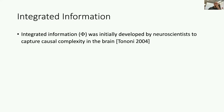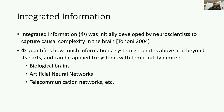Integrated information was initially developed by neuroscientists to capture causal complexity in the brain — typically the brains of biological animals. In a nutshell, Phi, or integrated information, is a measure that quantifies how much information a system generates above and beyond the parts of that system. The main condition for application of this measure is that the system must have a temporal dynamic, meaning it has to be describable using a transition probability matrix.